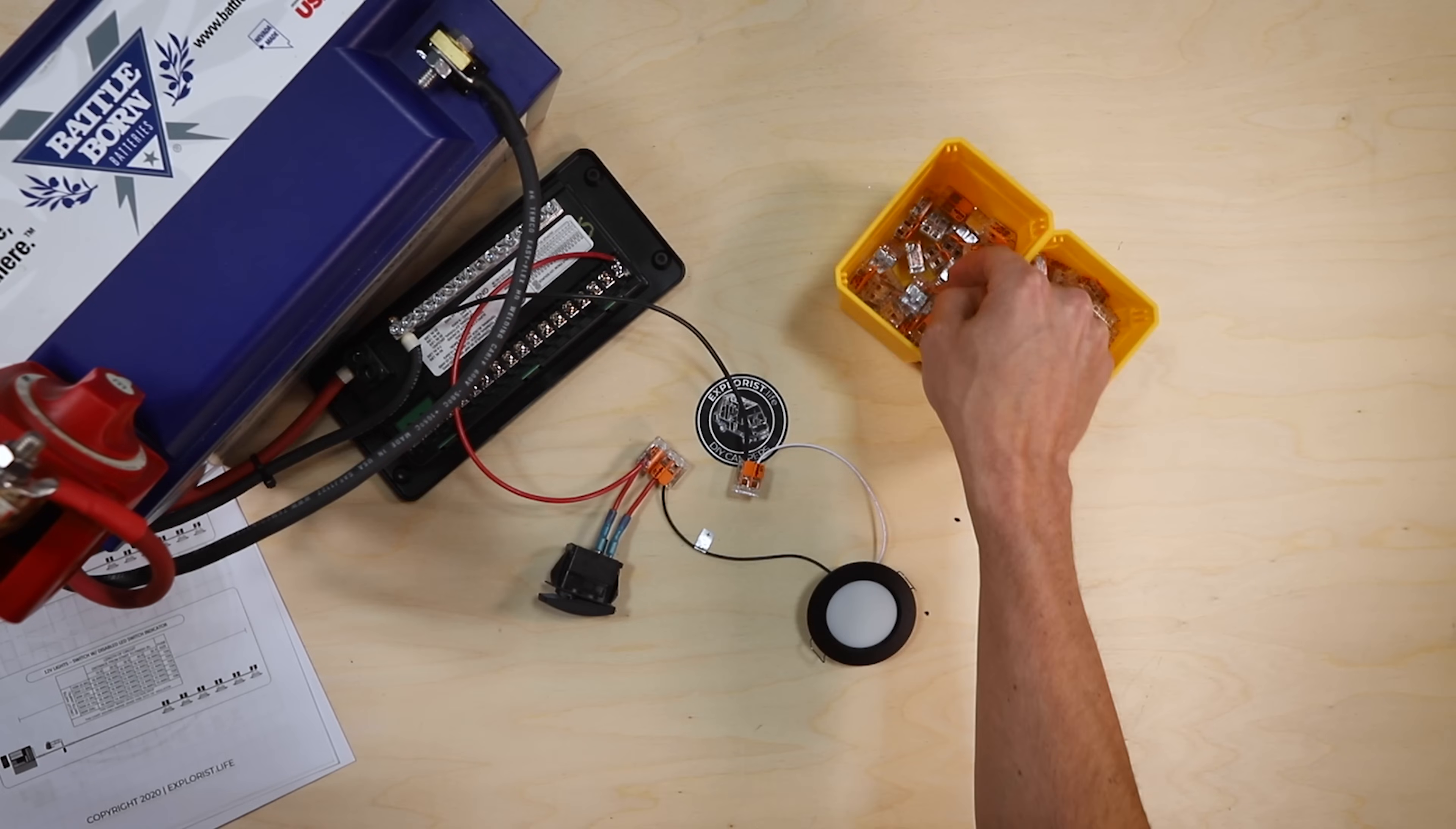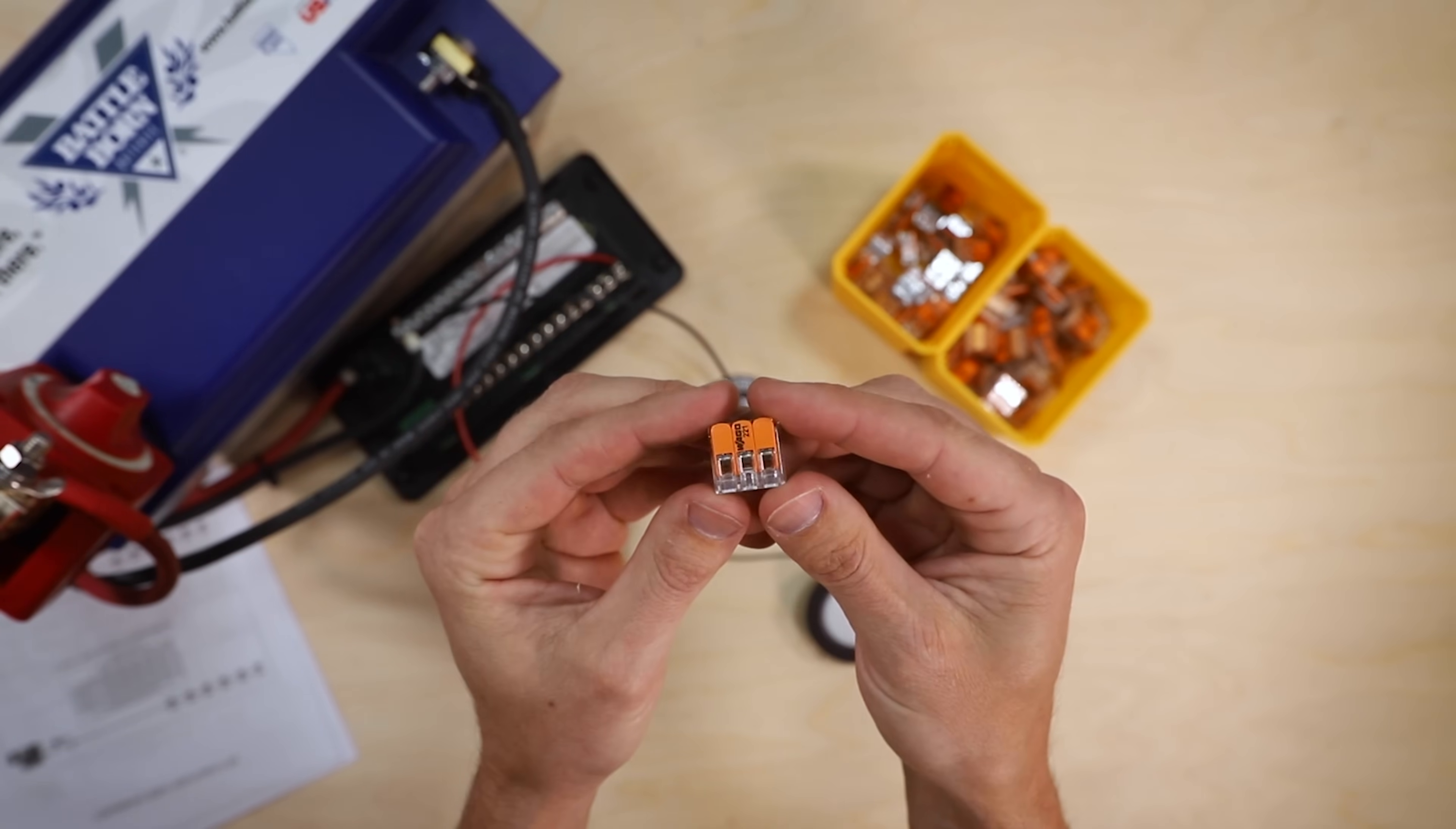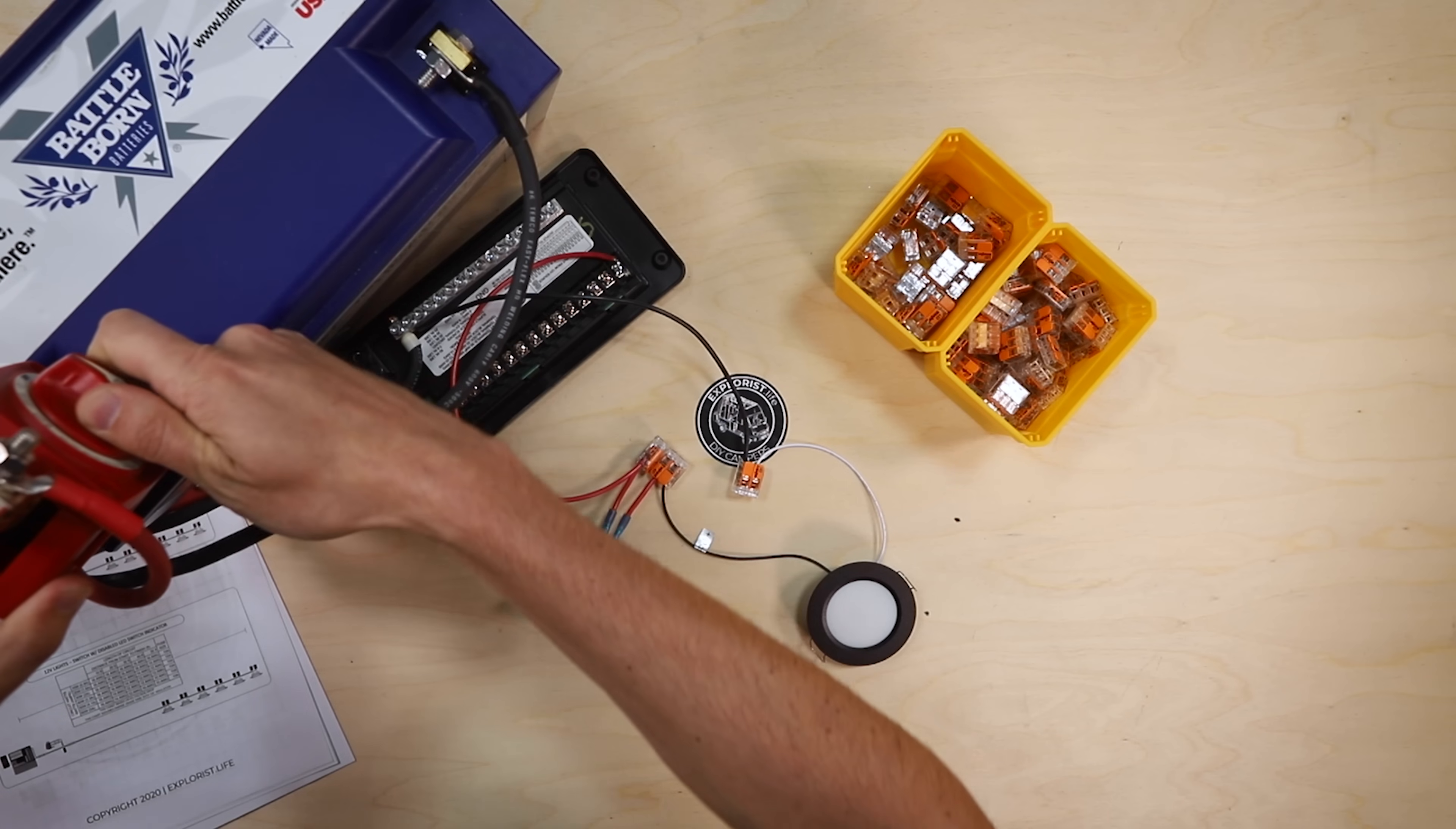We are going to need to introduce some three conductor lever nuts into the system. So one, two, and three, so that we can combine more of the positive wires into the same lever nut. And before we get working on the rest of the system, we're going to go ahead and disconnect battery power by turning off this battery switch.